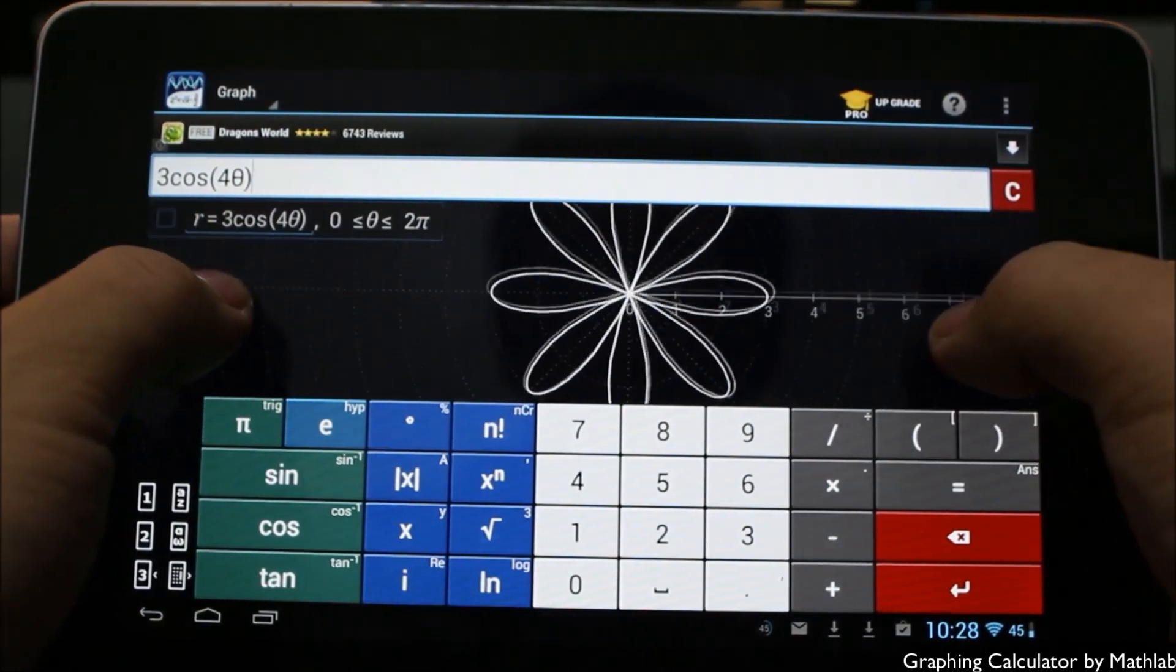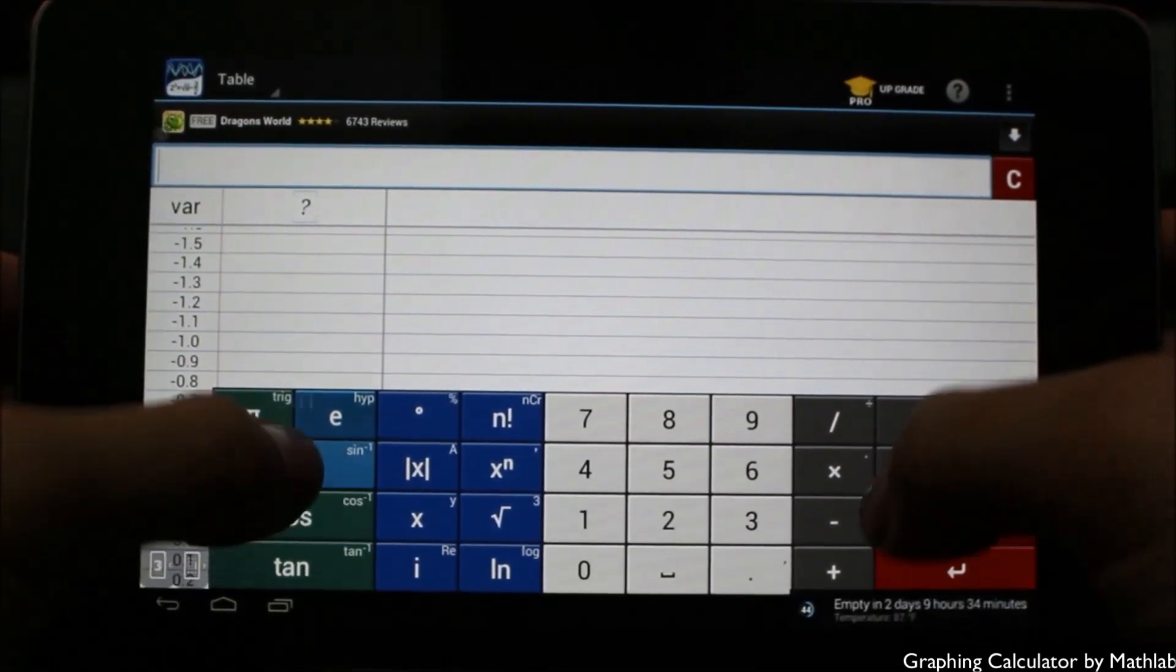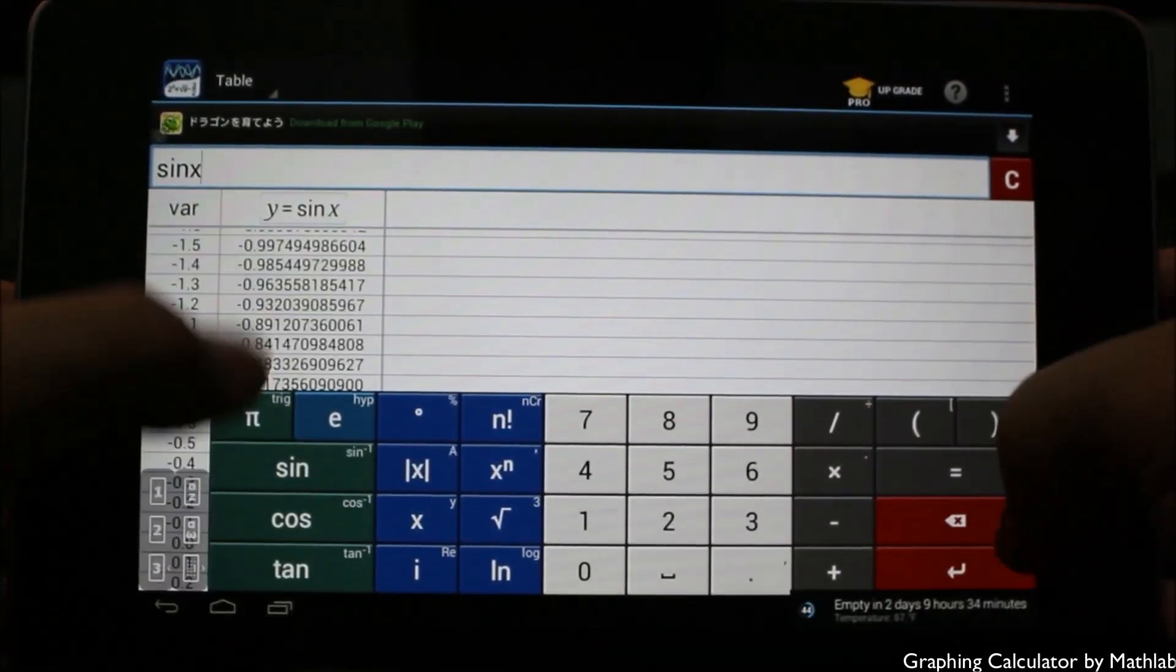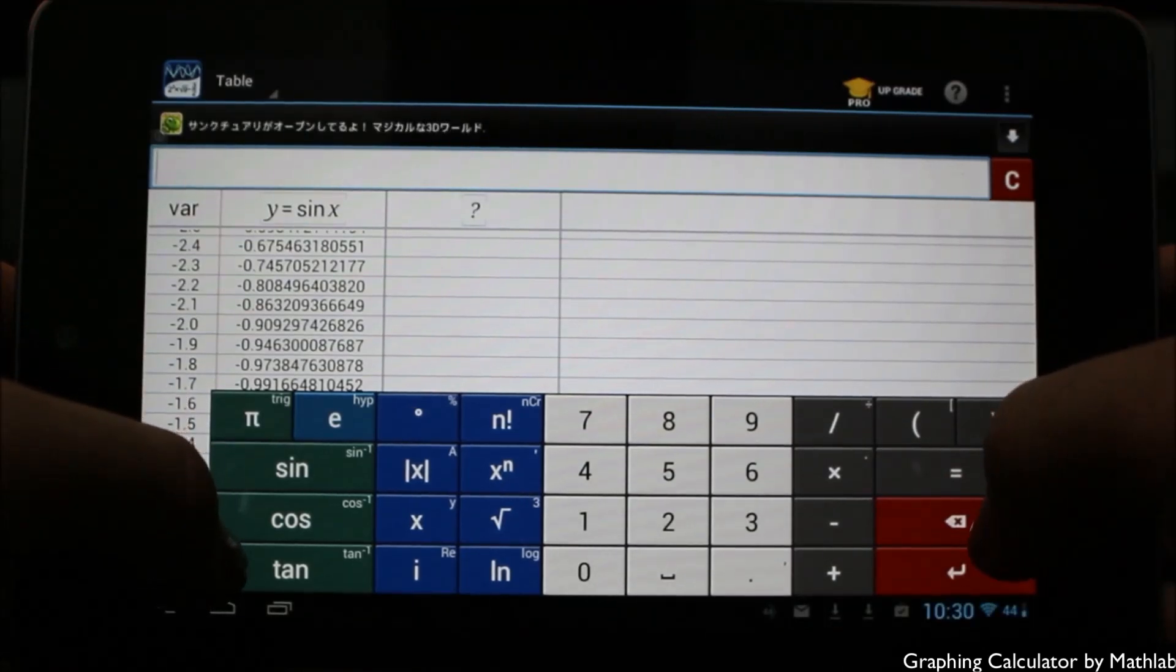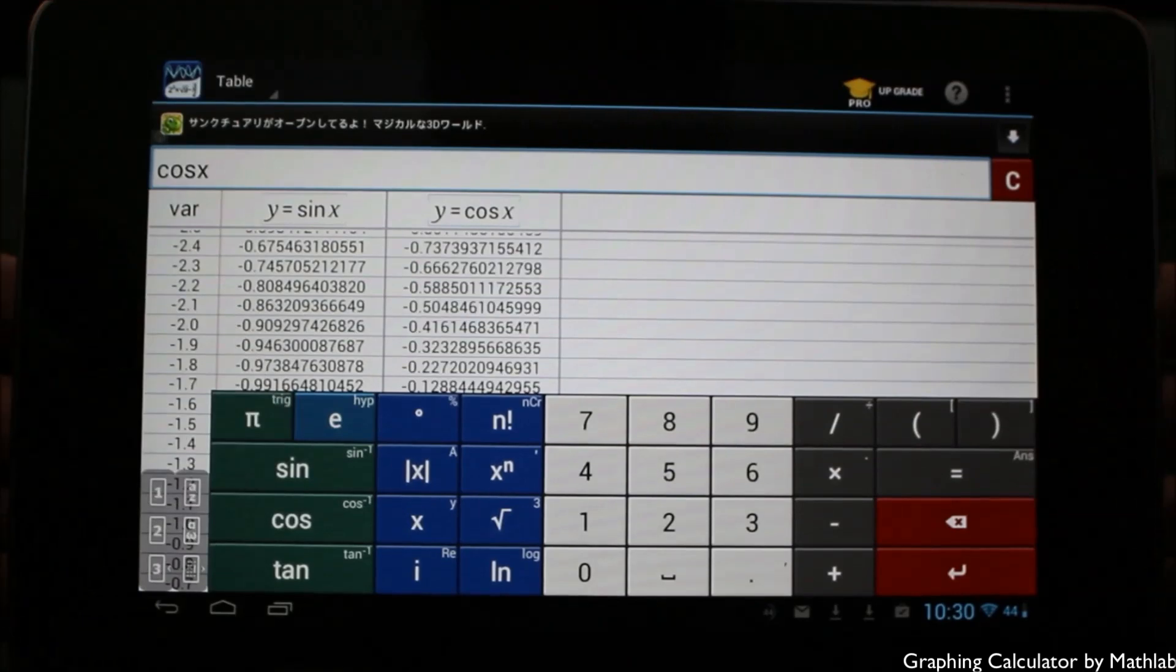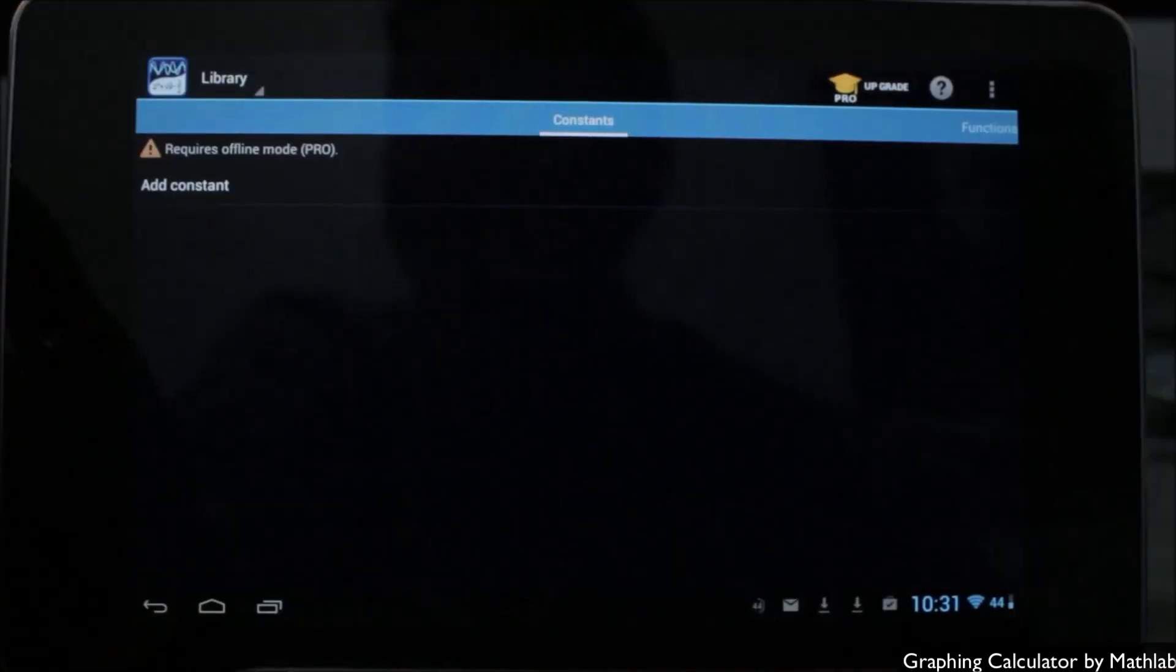Here we are in table mode. We can put for example sine X, you can see it'll generate the columns here. I can jump over to the next row over here and we'll type in cosine X and it'll generate those columns as well there.